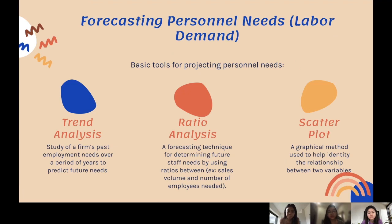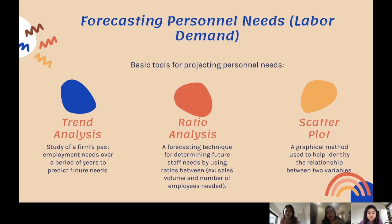For forecasting personal needs or labor demand, there are a few basic tools for projecting personal needs. The first one is trend analysis — a study of a firm's past employment needs over a period of years to predict future needs. There is also ratio analysis, a forecasting technique for determining future staff needs by using ratios between, for example, sales volume and number of employees needed. The third tool is a scatter plot, a graphical method used to help identify the relationship between two variables.